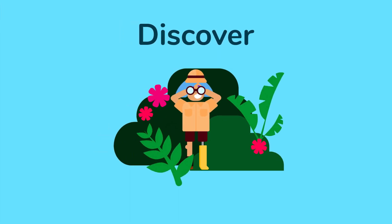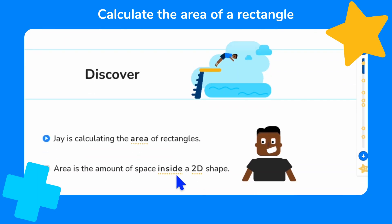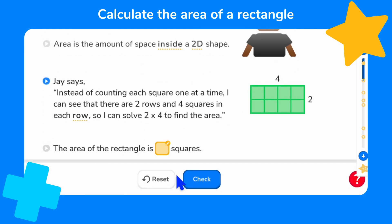Now we're ready to discover our new learning. Jay is calculating the area of rectangles. We are reminded that area is the amount of space inside a 2D shape. Jay says, instead of counting each square one at a time, I can see that there are two rows and four squares in each row.